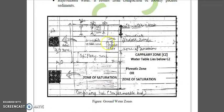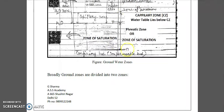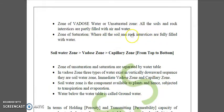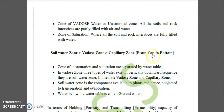Then we have the zone of saturation, where all the soil and rock interstices are fully filled with water. Going from top to bottom: soil water zone, vadose zone, capillary zone, and then zone of saturation or phreatic zone.